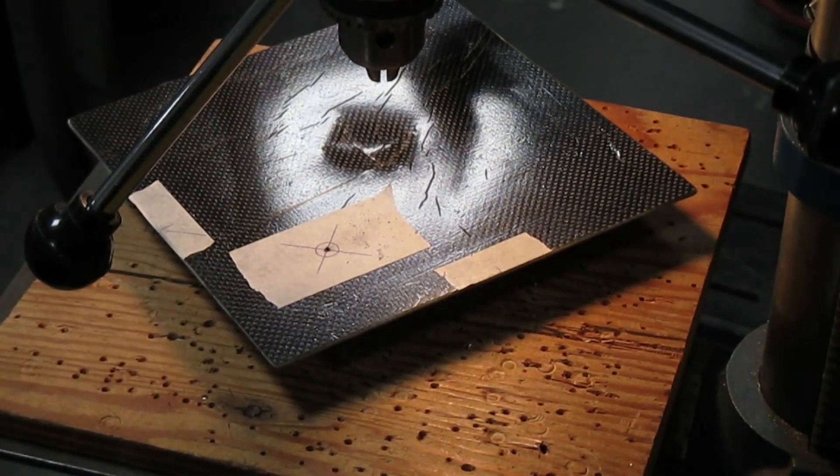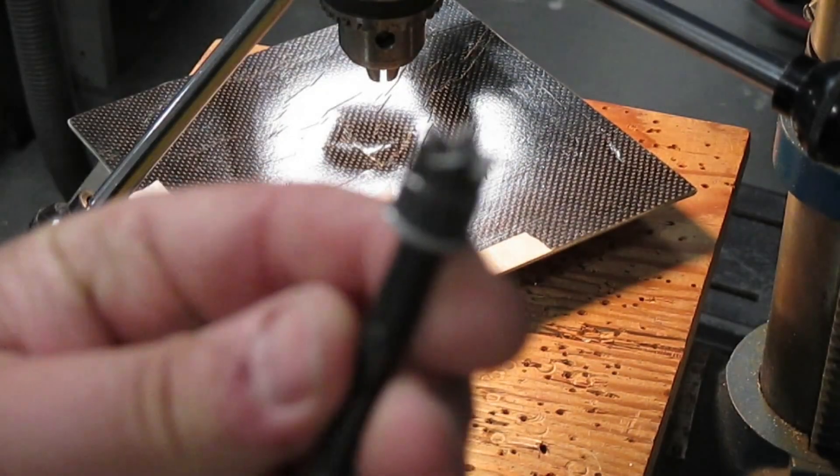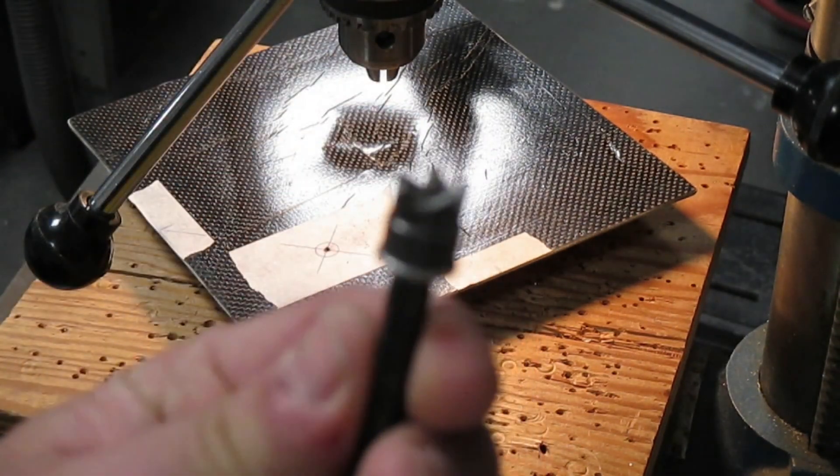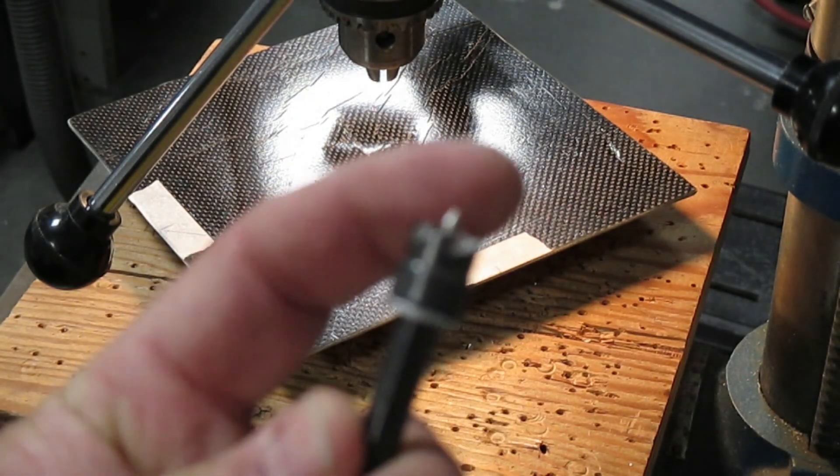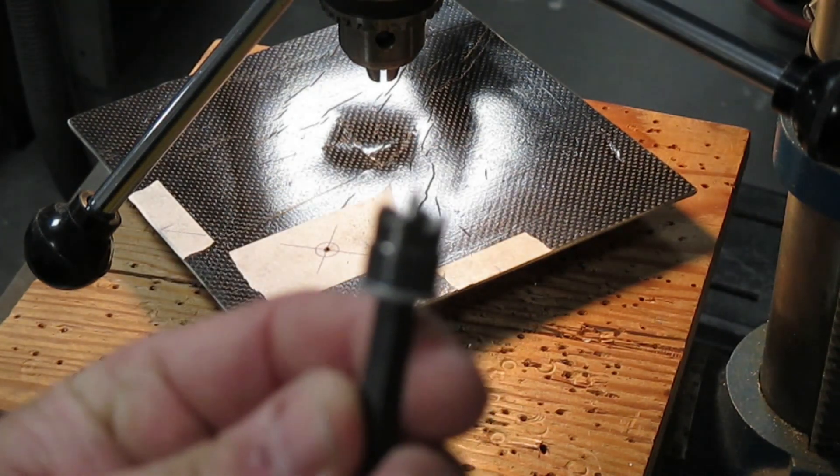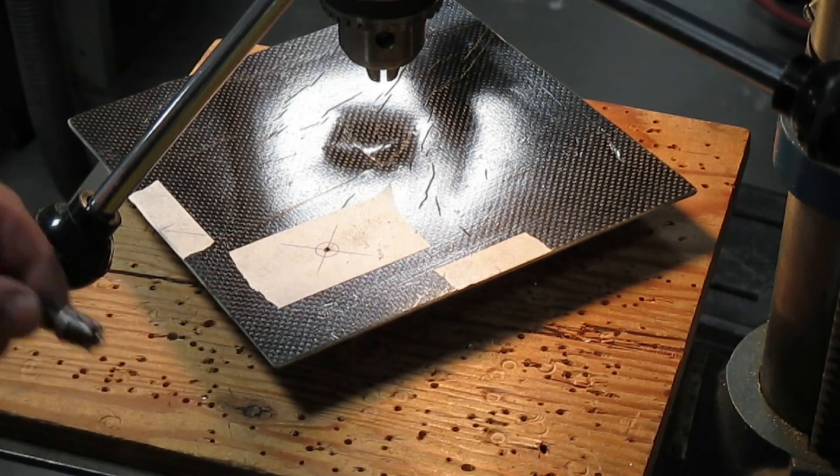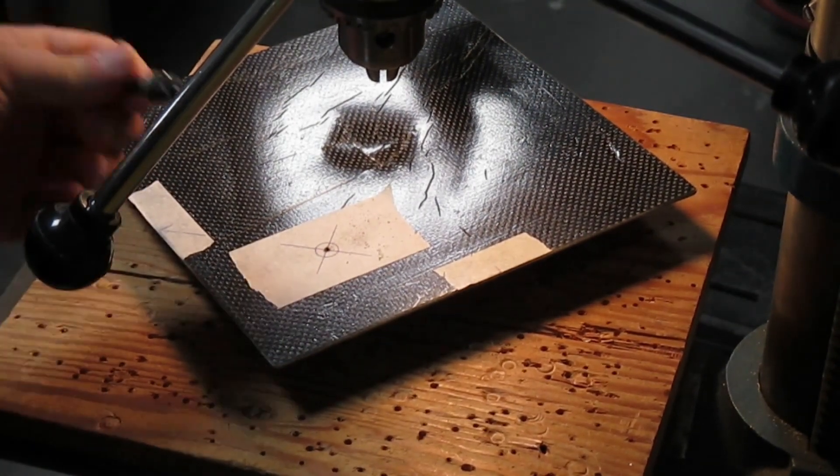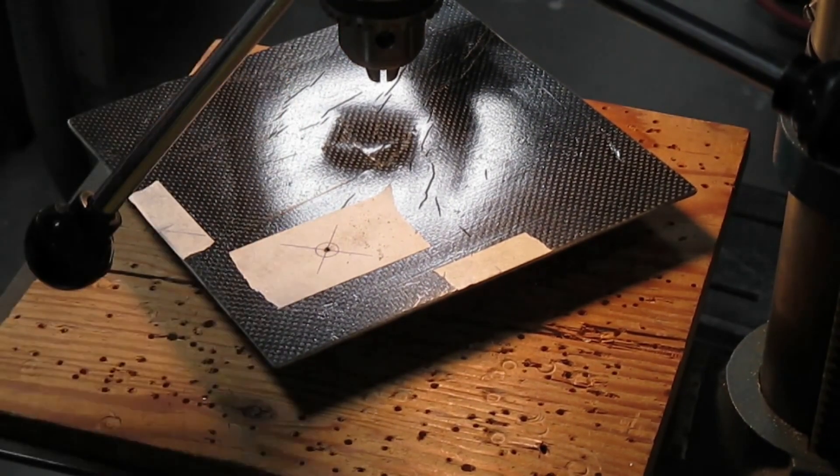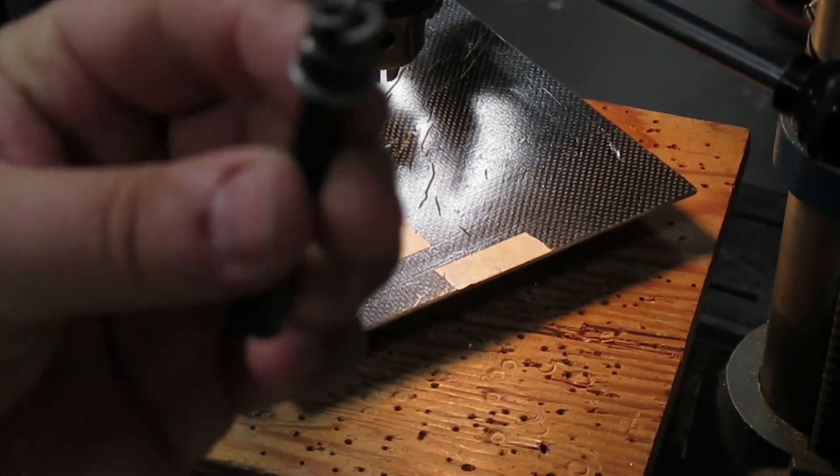Now we're ready to do some rotor broaching. This tool is specifically designed with a little pin on the end. The pin is designed so it can compress. We're going to push that into that center hole, it's going to keep this tool nice and centered.